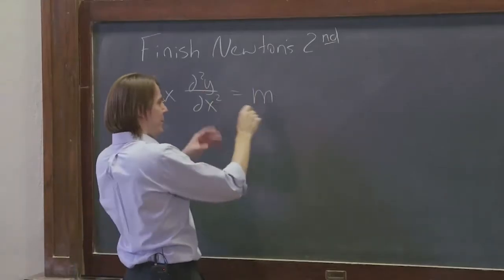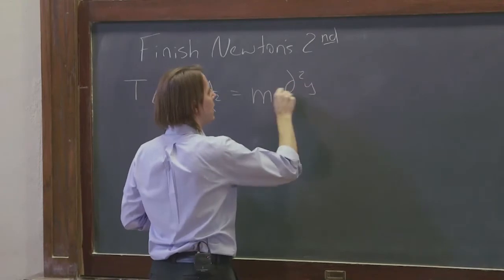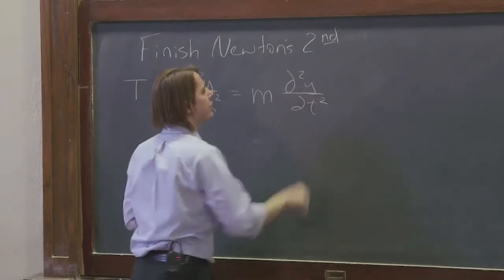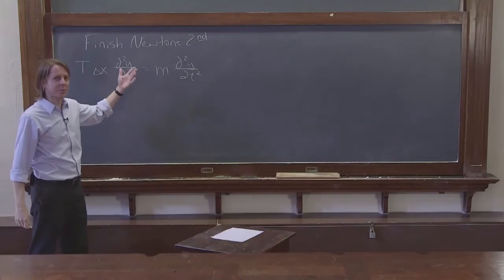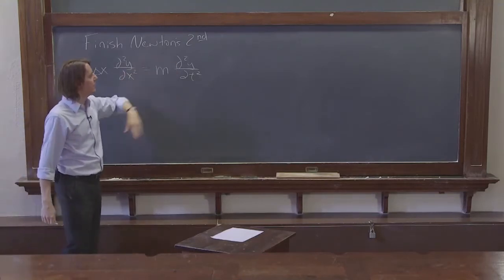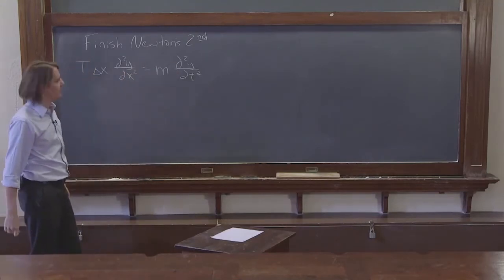The acceleration of that little piece of string is really just d²y/dt². So y is a function of time, it's a position, dy/dt is the velocity, second derivative d²y/dt² is the acceleration.